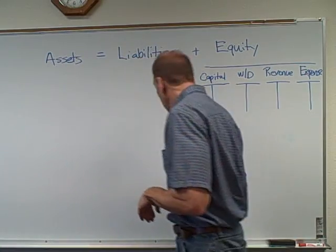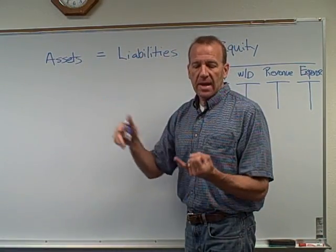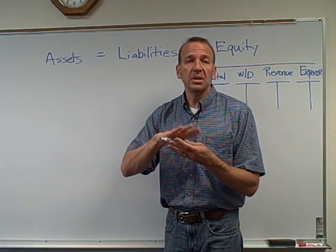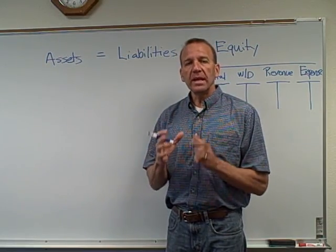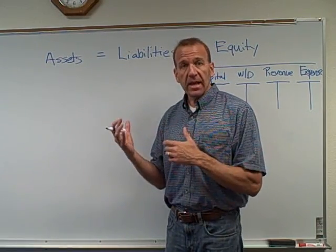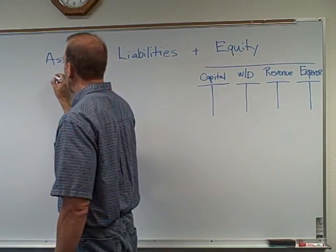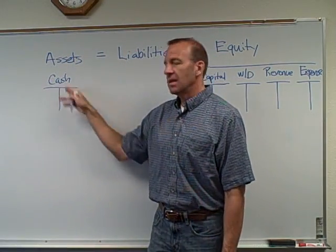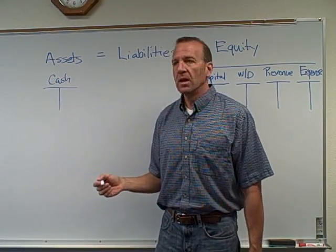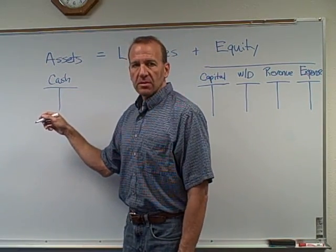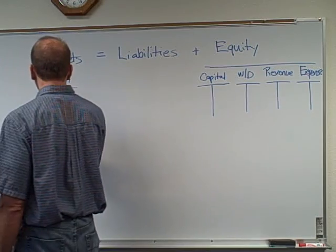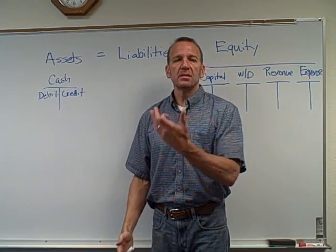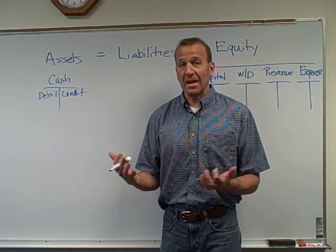Assets include cash, accounts receivable, supplies, automobiles, buildings, and land. Each asset will have its own account — its own t-account. The most popular example is cash. A t-account looks like the letter T, which is where it gets its name. The left side of the t-account is the debit side, and the right side is the credit side.